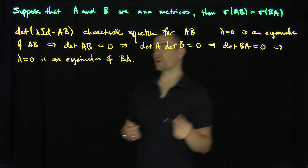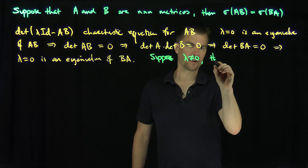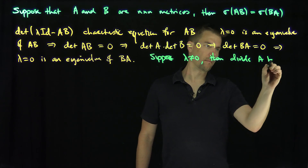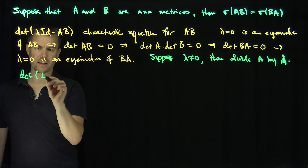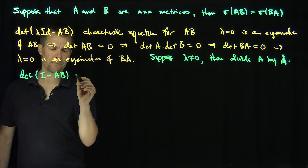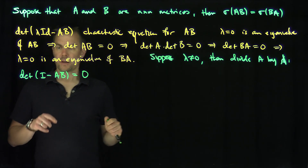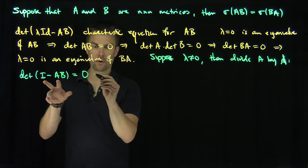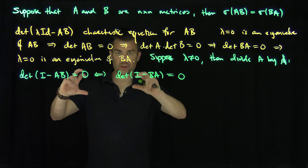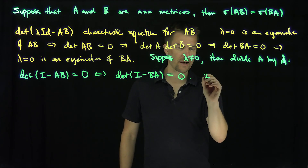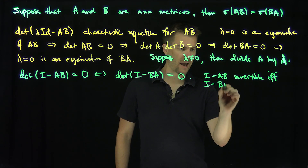Now, what about the situation when you don't have a zero eigenvalue? Suppose lambda is not equal to zero. Then we divide by lambda, so that the determinant of the identity minus a modified AB is equal to zero. We want to show that this operator is not invertible if and only if the identity minus BA is also not invertible. In other words, identity minus AB is invertible if and only if identity minus BA is invertible.